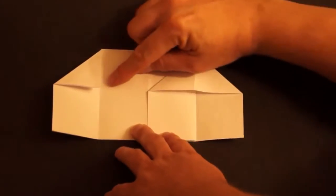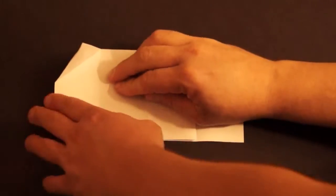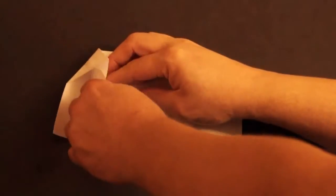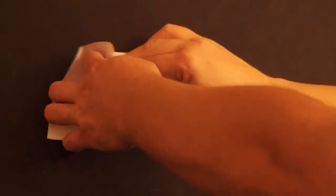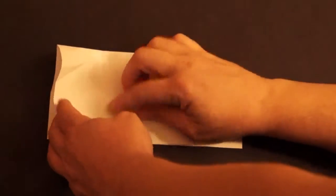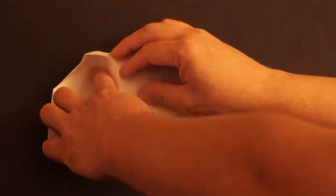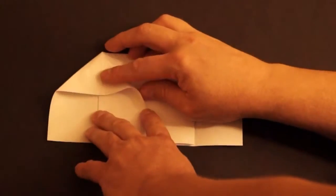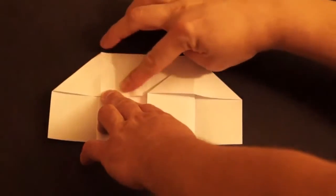Do the same thing on the other side. Lift up the flap. Open the end. Make sure it folds on this crease right here. Press the top down like a triangle.